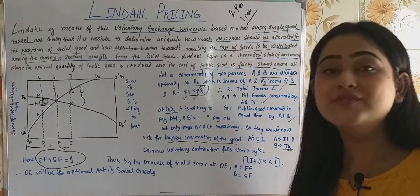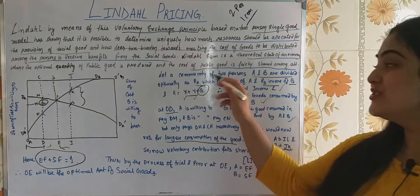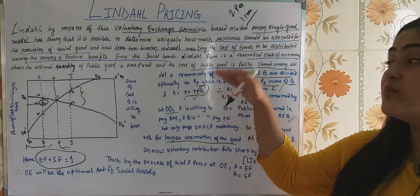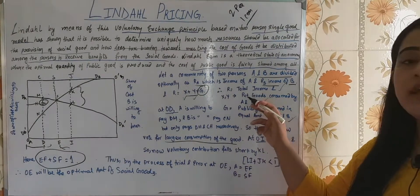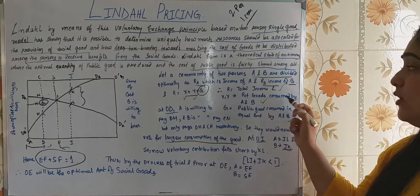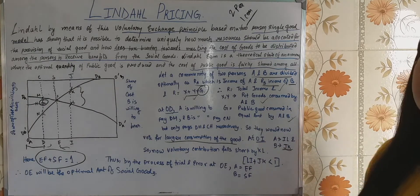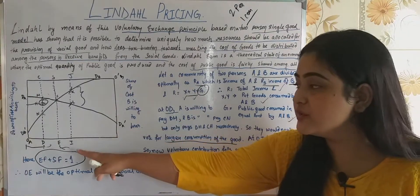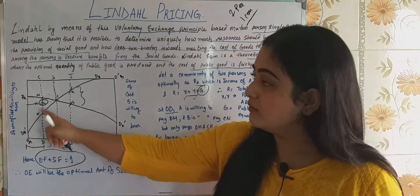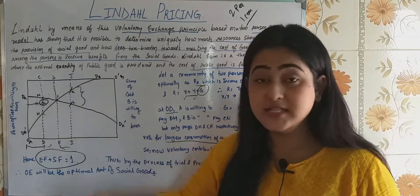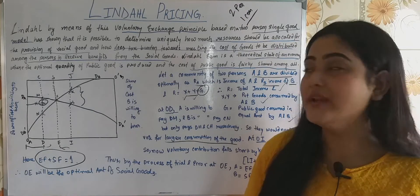But what about the public commodity G? The price of the public commodity will have to be divided between the two individuals in society. So R equals the total income; X and Y are private goods consumed by A and B; and G is the public good consumed in equal amounts by A and B. At quantity OAD, A's willingness to pay is DM and B's willingness to pay is CN.